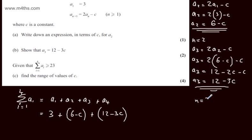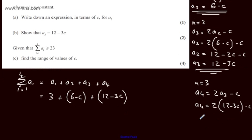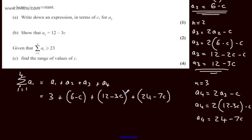Setting n = 3, we get a_4 = 2a_3 - c = 2(12 - 3c) - c = 24 - 6c - c = 24 - 7c. Summing all terms: 3 + (6 - c) + (12 - 3c) + (24 - 7c). The constant terms give 3 + 6 + 12 + 24 = 45, and the c terms give -c - 3c - 7c = -11c.